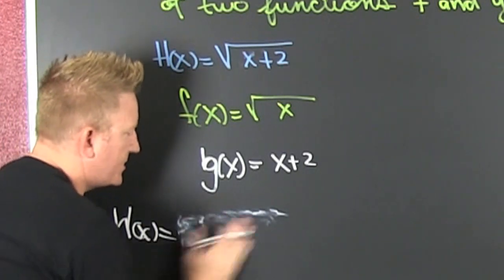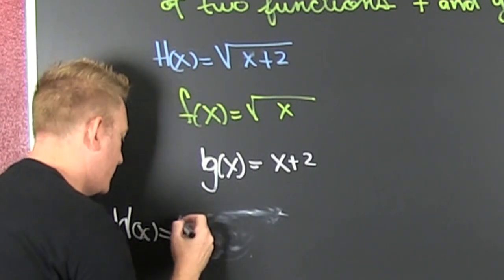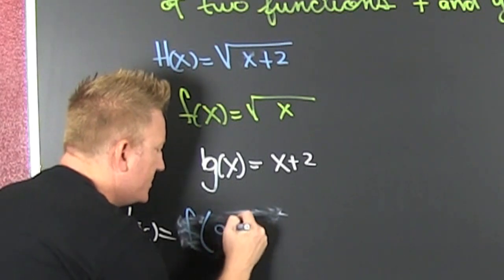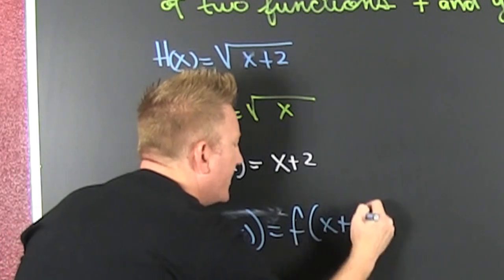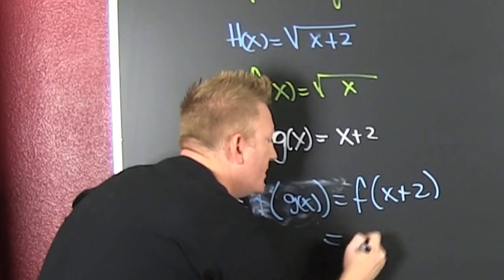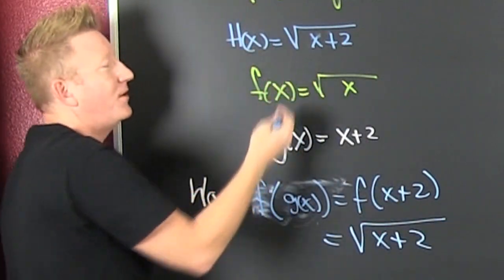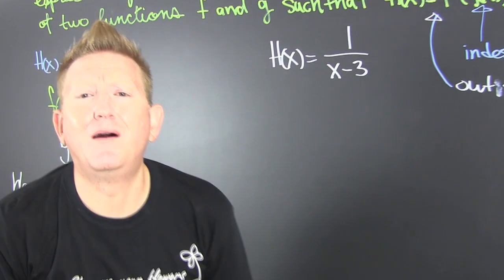Okay, there we go. Switch colors. Switch videos. F of G of X. What's next? That's F of X plus two. What do you do? That's the square root of X plus two, which is what you wanted. I don't know why you make it so hard.